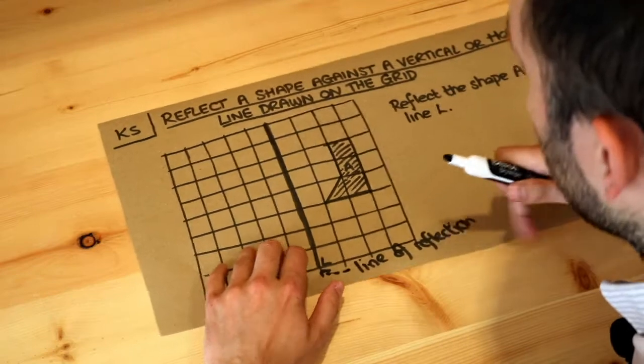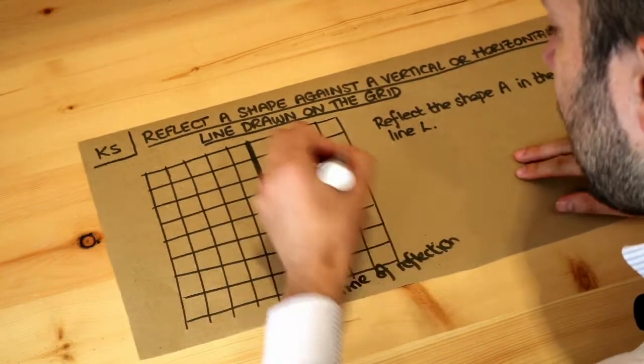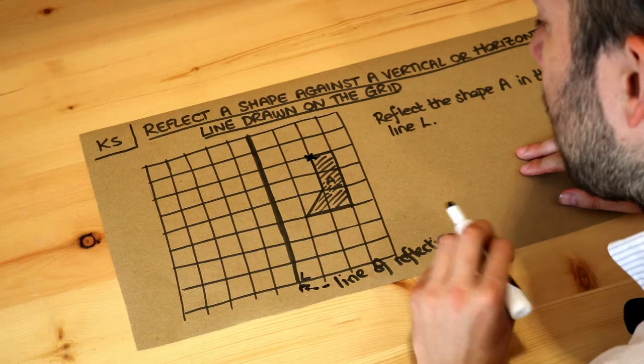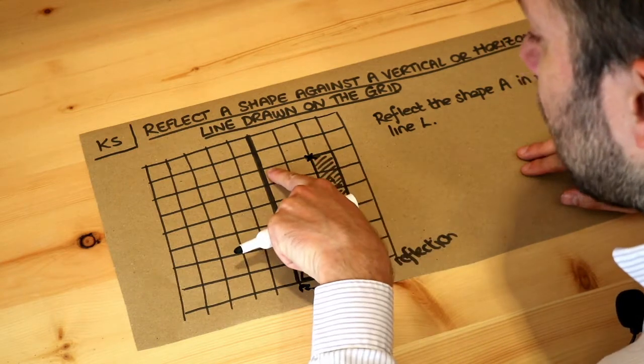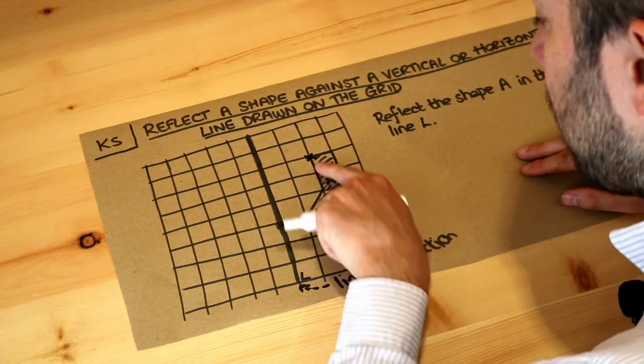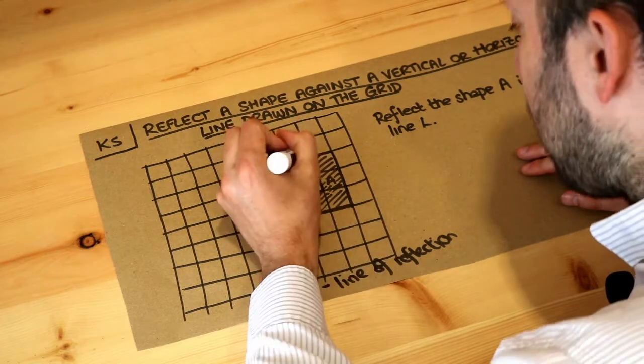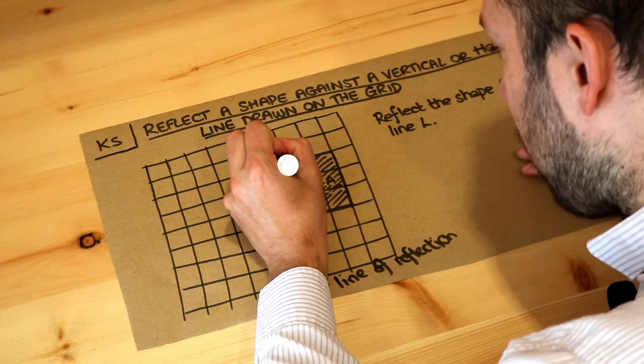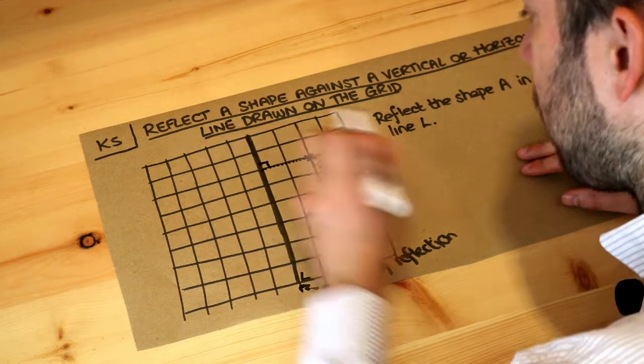And the way we do that is to take each point on the shape, so let's put a little cross here. Then we go directly towards the line of reflection, so directly towards it in the shortest route. So it should be at right angles to this, look this should be a right angle.